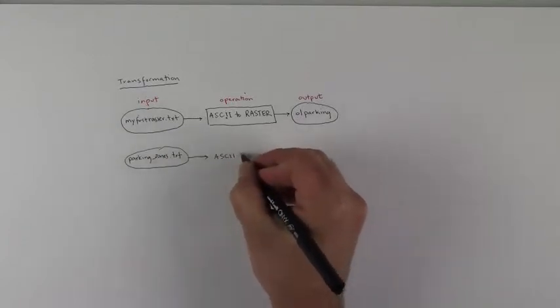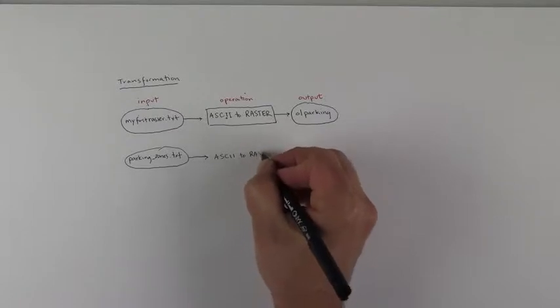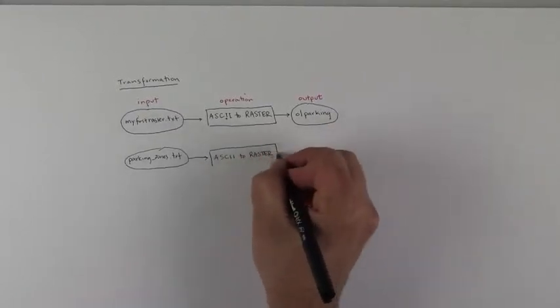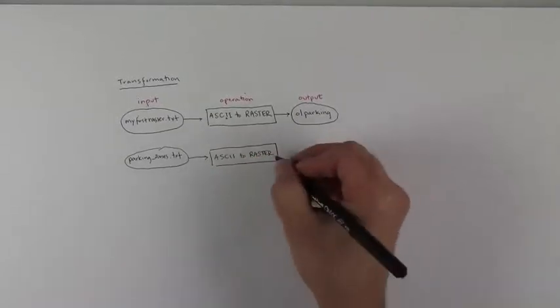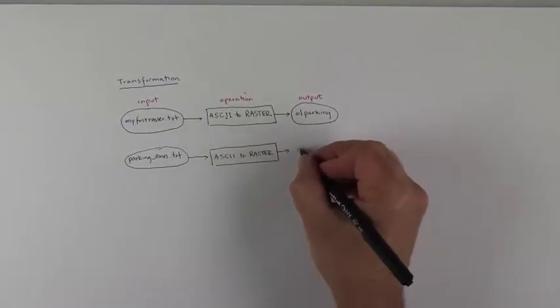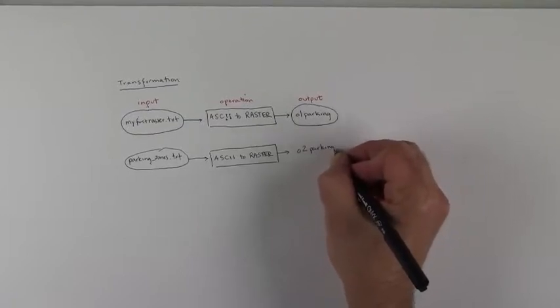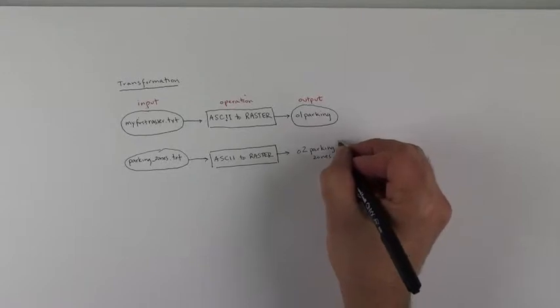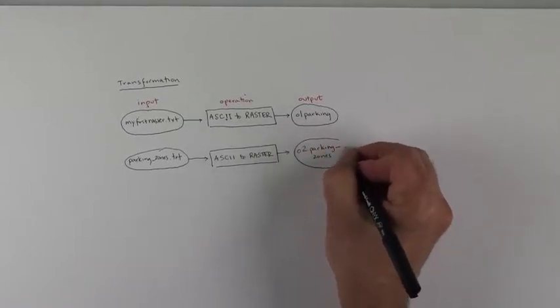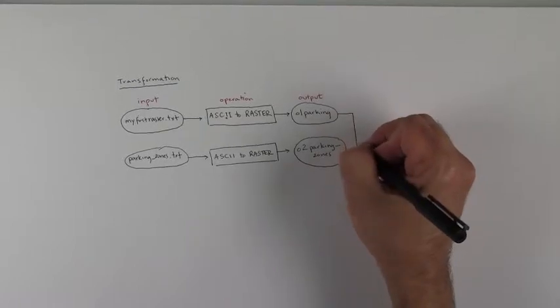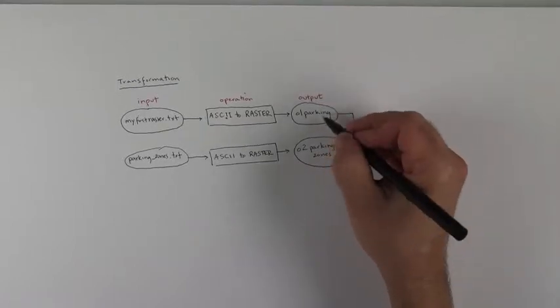And you kicked out Othello 2 parking zones, and you did this in order to then take these two outputs.